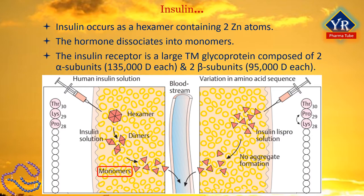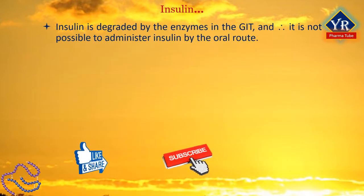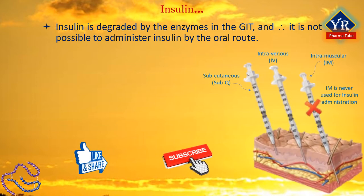The insulin receptor is a large transmembrane glycoprotein composed of two alpha subunits and two beta subunits. The subunits are linked by disulfide bonds to form a beta-alpha-alpha-beta heterotetramer. Insulin circulates in the blood as the free monomer. Insulin is destroyed or degraded by the enzymes in the gastrointestinal tract and therefore it is not possible to administer insulin by the oral route.